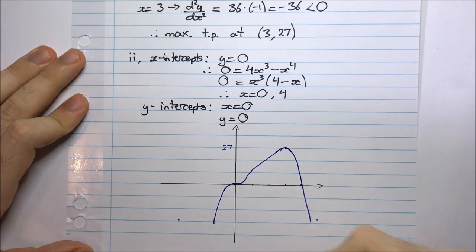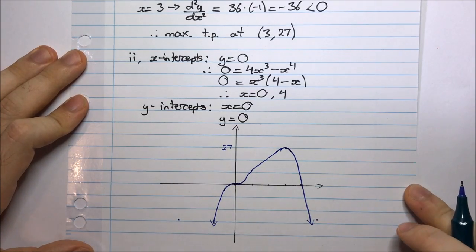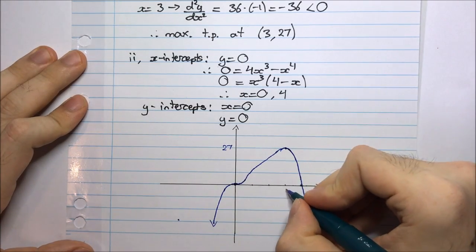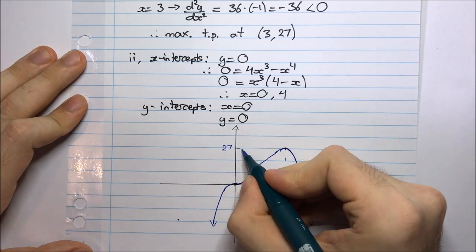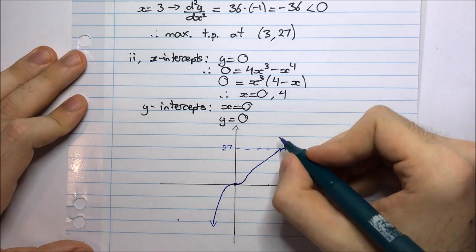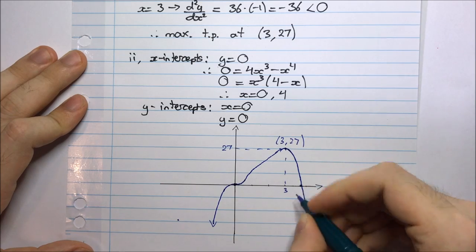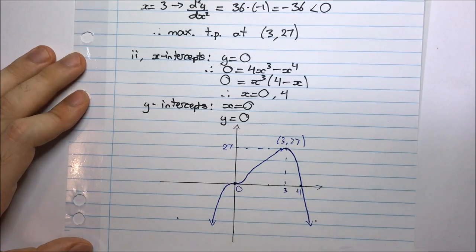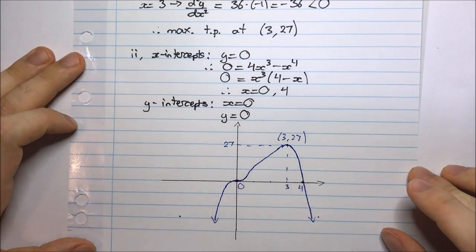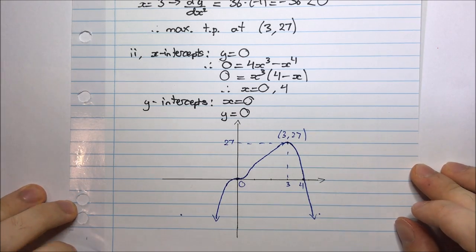My diagram is probably not going to be the neatest, but the concern is that I have the general shape of this function. Here is my point 3, and I have my turning point at (3, 27). Here is my intercept at 4, here is the origin, and I'm going down to negative infinity both ways. That's the end of the question.